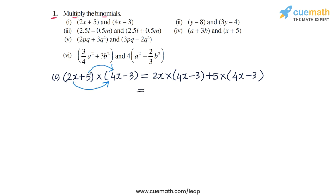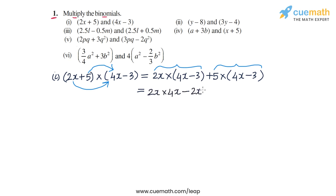We have 2x into 4x minus 3 and 5 into 4x minus 3. We expand each of these products again using the distributive law. From the first product we get 2x into 4x, then minus 2x into 3. From the second product we get 5 into 4x, then minus 5 into 3.